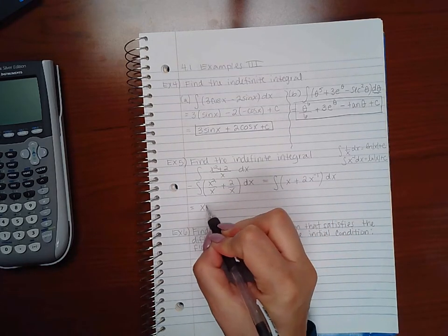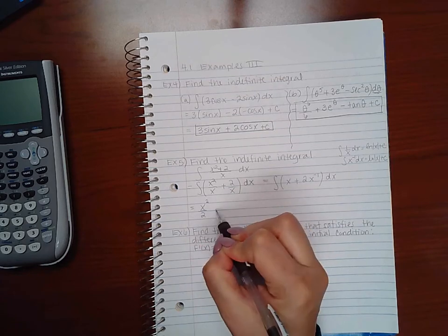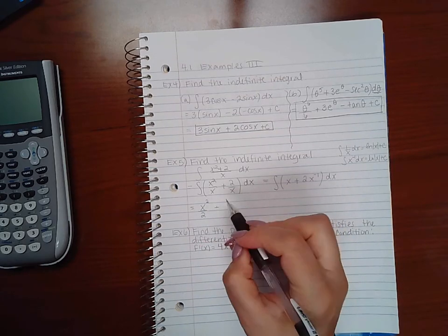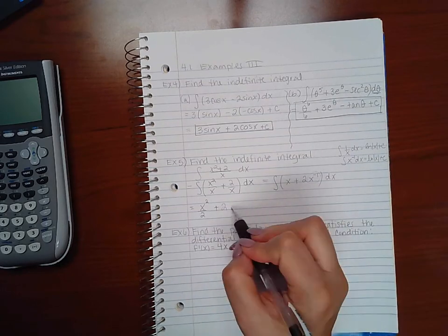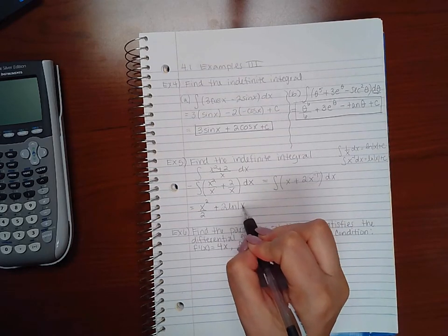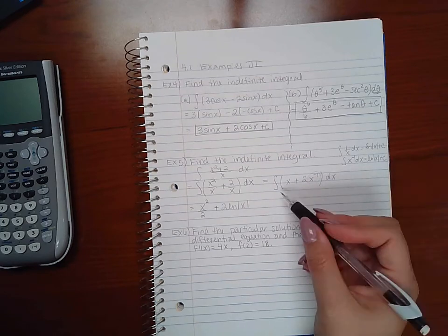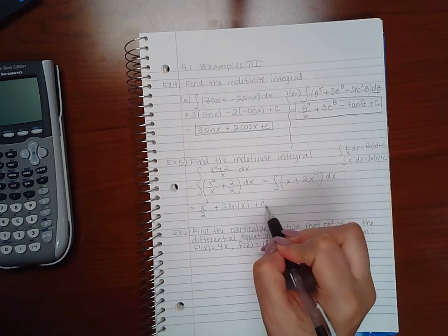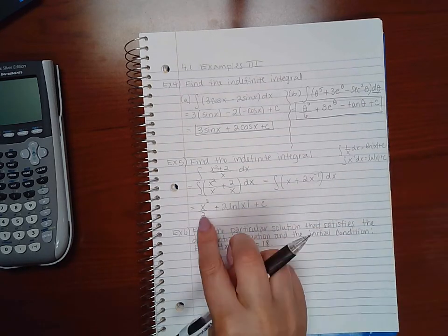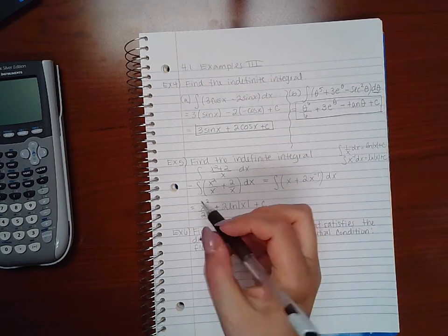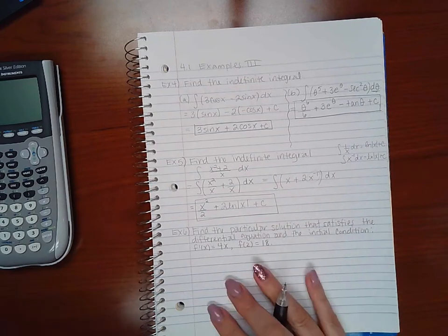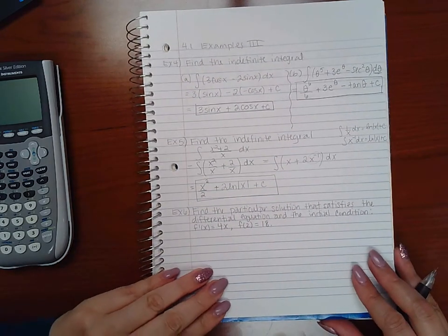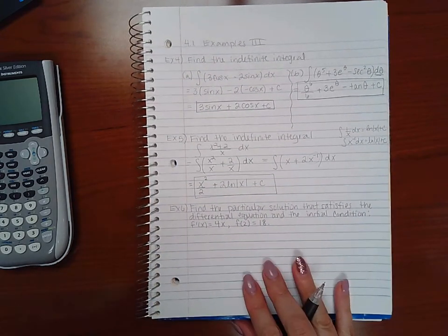So here, when I integrate this, the integral of x is x squared over two. I'm going to keep my constant multiplier of a two, and the integral of this term is going to be ln of the absolute value of x. Now because I did apply my rules to each term, I do have to put my constant of integration. This does not simplify, so therefore this is my final answer.